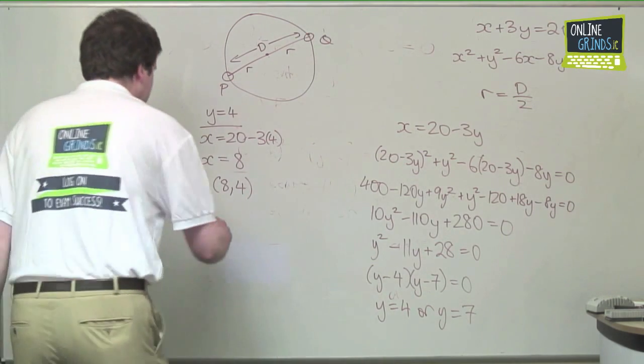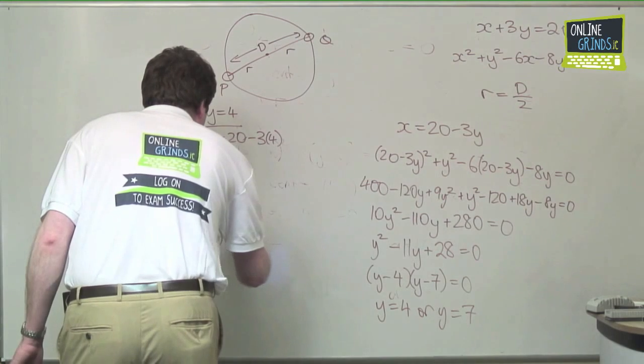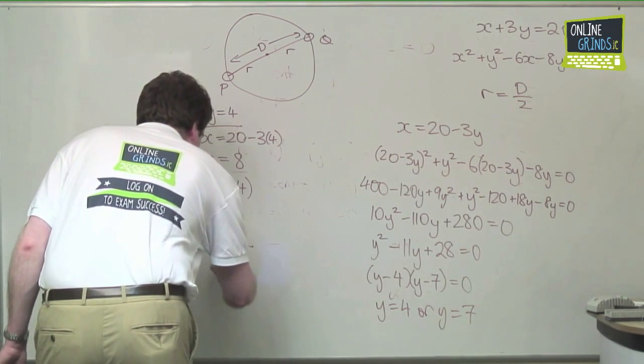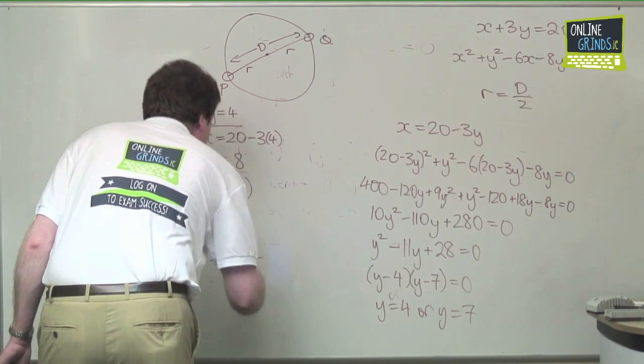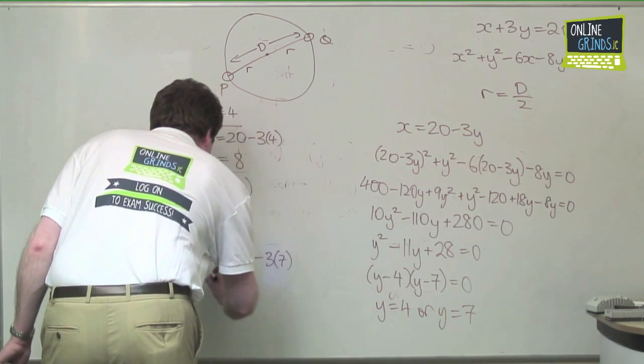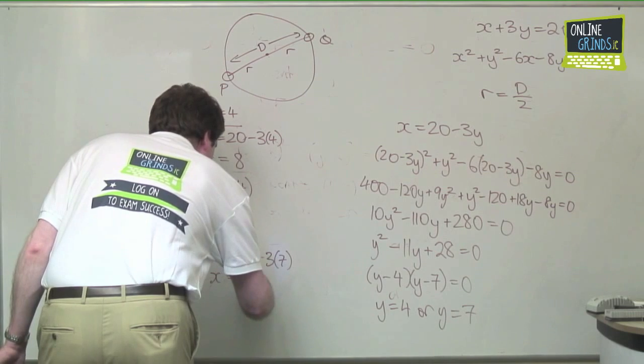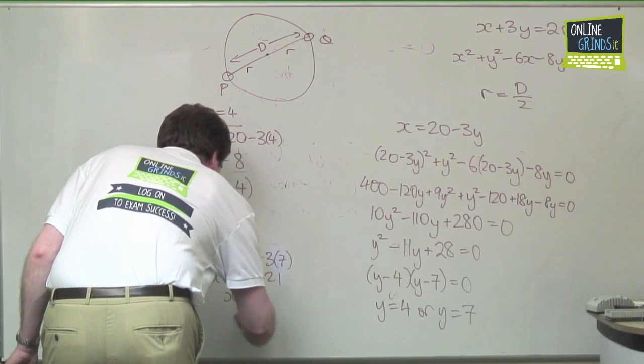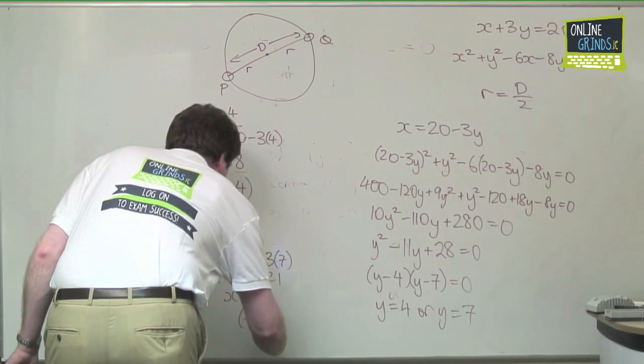For y equals 7, we have x is equal to 20 minus 3 times 7. x is equal to 20 minus 21. x is equal to minus 1. Very exciting. So we have minus 1, 7.